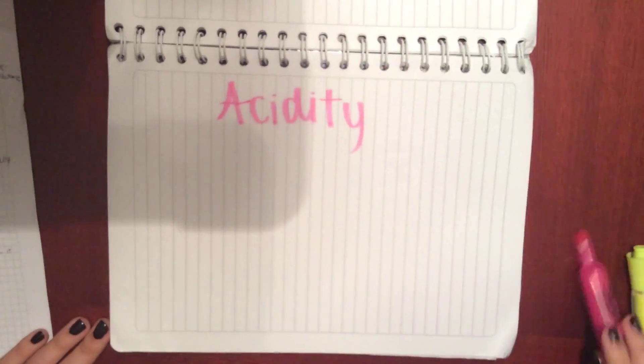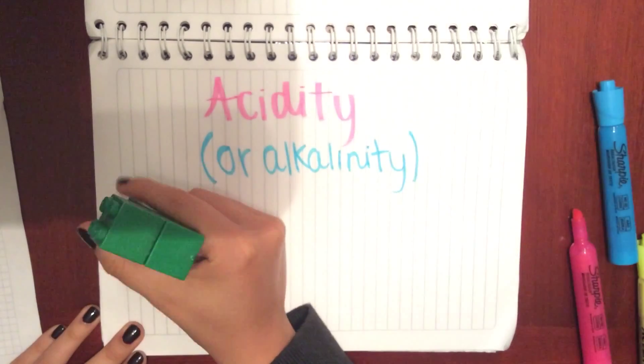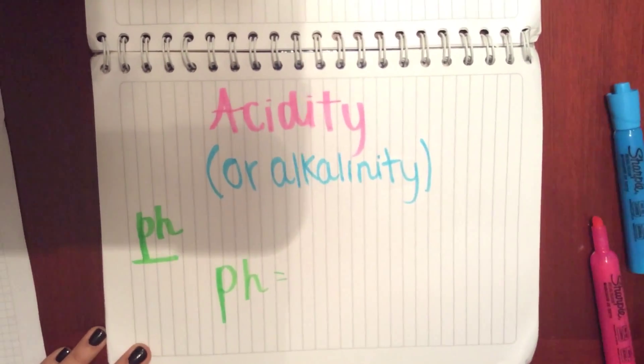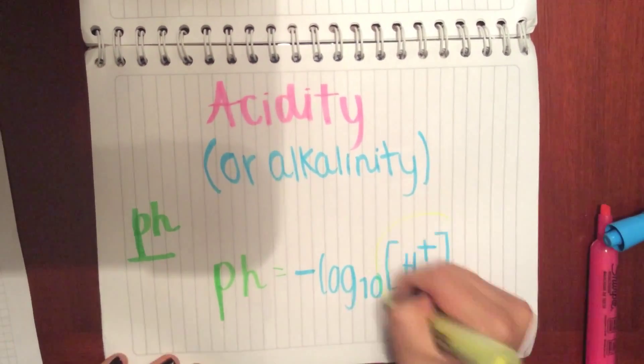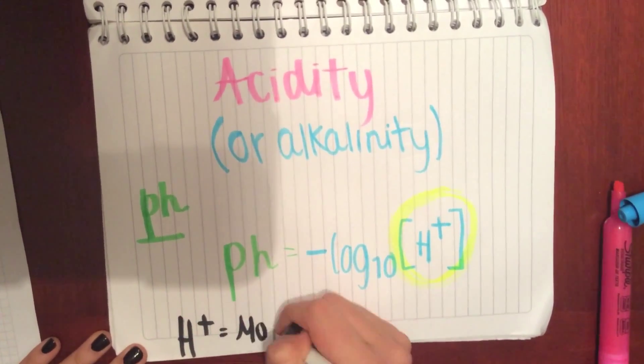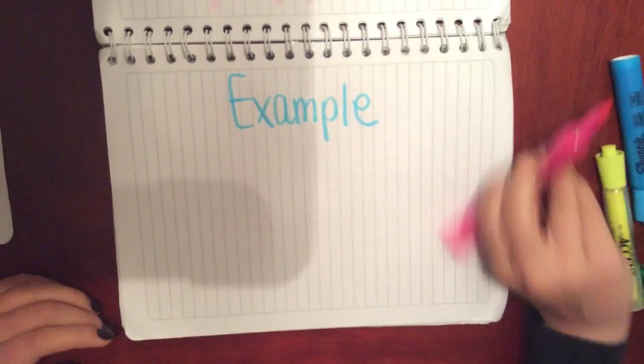Logs are also used to measure the acidity or alkalinity of a substance. It is measured in pH using the formula: pH equals negative log base 10, open brackets, H plus, close brackets.